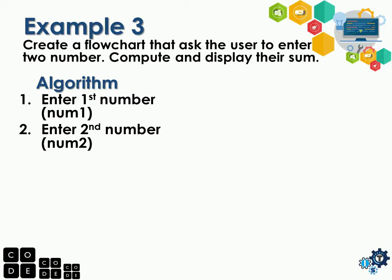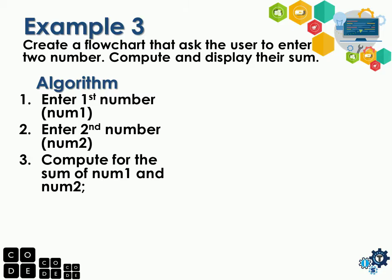When the user has entered the 2 numbers, the next step says 'compute'. We're going to compute the sum of num1 and num2. The equation is: sum is equal to num1 plus num2. After the computation, it says 'display their sum', so step number 4 is to display.